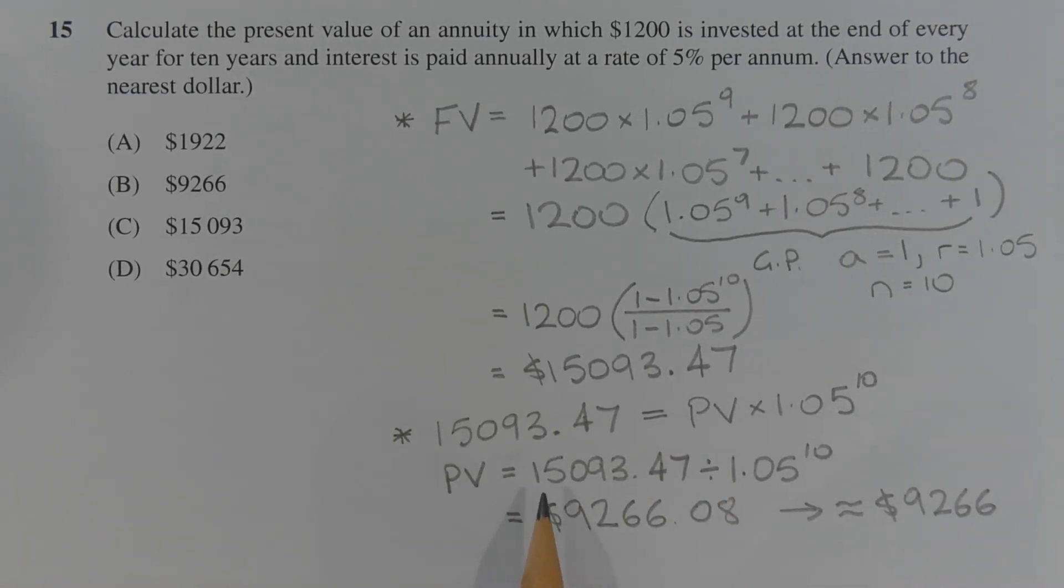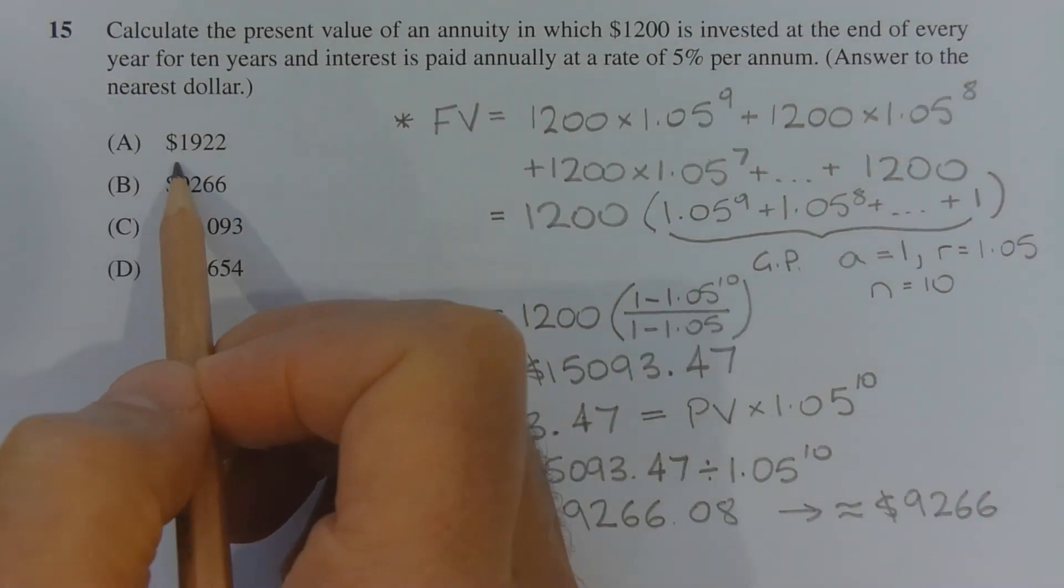we get present value is equal to $15,093.47 divided by 1.05 to the power of 10, which equals $9,266.08, which rounds to $9,266, correct to the nearest dollar. Therefore, the answer is option B.